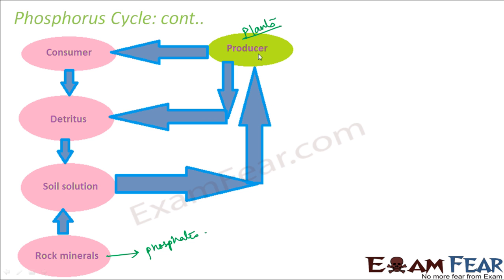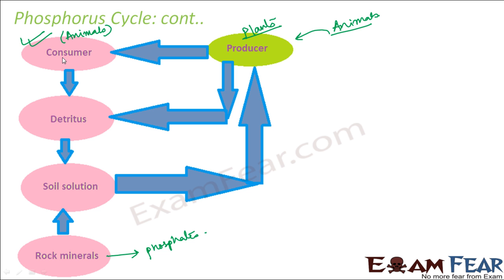The roots absorb the phosphates from the soil solution and that is how different parts of the plant get it. Now the plants become a good source of phosphorus. When animals eat those plants — because animals are directly or indirectly dependent on plants — the animals also get it. So the consumers, whether herbivores, carnivores, or top carnivores, receive phosphorus from plants.